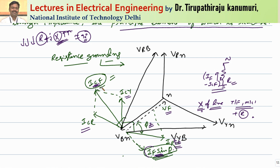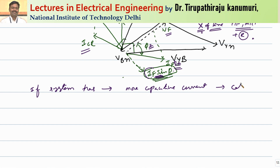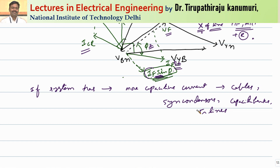If the system has more capacitive components — for example cables, synchronous condensers, capacitor banks, or transmission lines without transformers — the capacitive currents will be dominating. When capacitive currents are more, the value of IF sin phi required will be more, so automatically the fault current required will be more, and hence more losses will be there in the resistor.